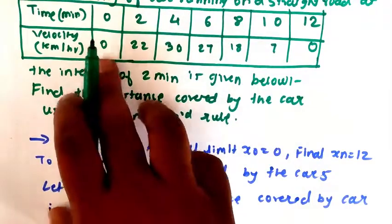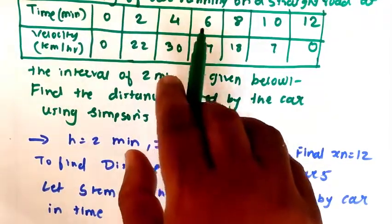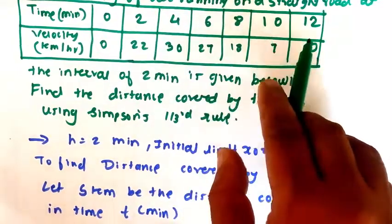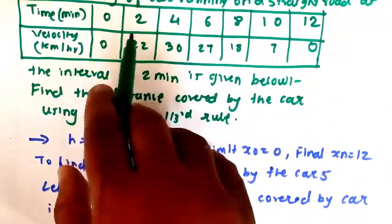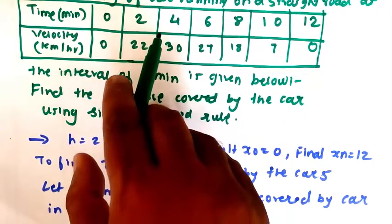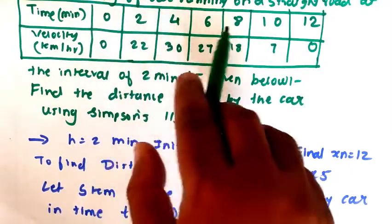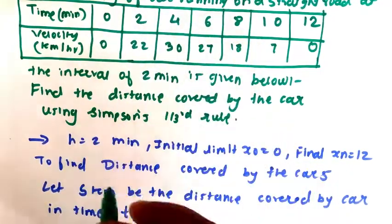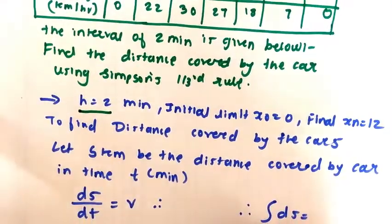And the step size is also 2. Step size is 0, 2, 4, 6, 8, 10, 12. So here the step size, the distance between each is 2. How to calculate: 4 minus 2 is 2, 6 minus 4 is 2, 8 minus 6 is 2, so step size h is 2 minutes.